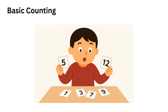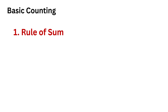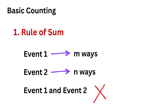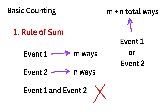Basic counting gives us simple tools to find the number of outcomes without listing them all one by one. The first rule is the rule of sum. If one event can happen in m ways, and another event can happen in n ways, but both cannot happen together at the same time, then there are m plus n total ways for either to occur.